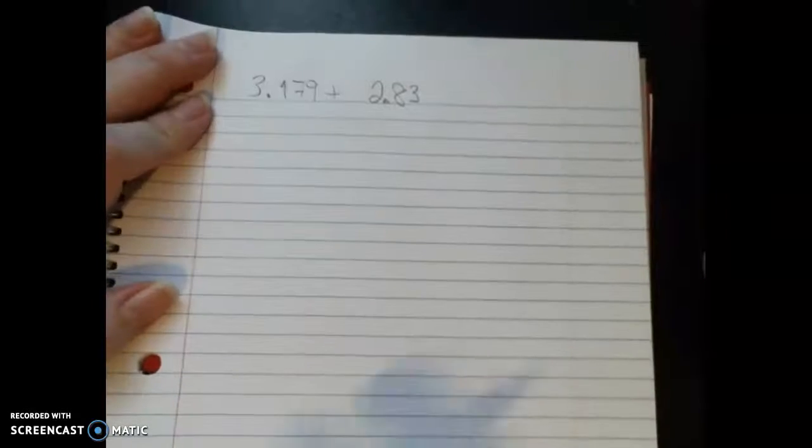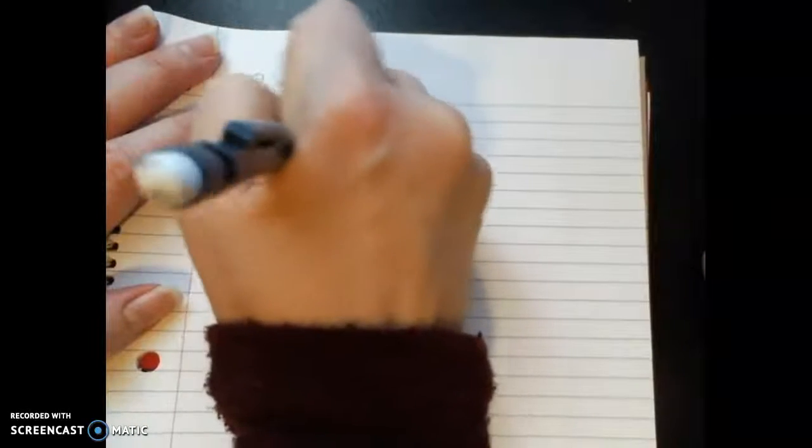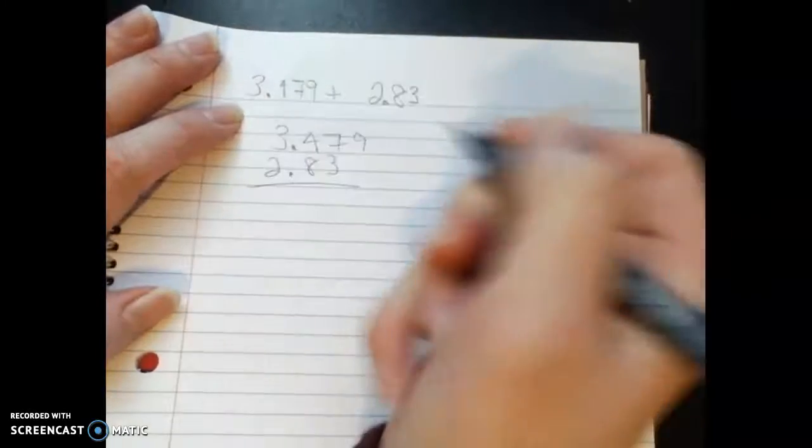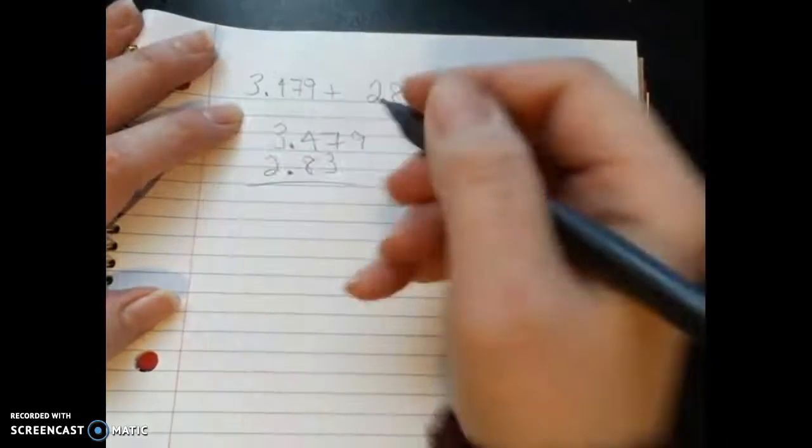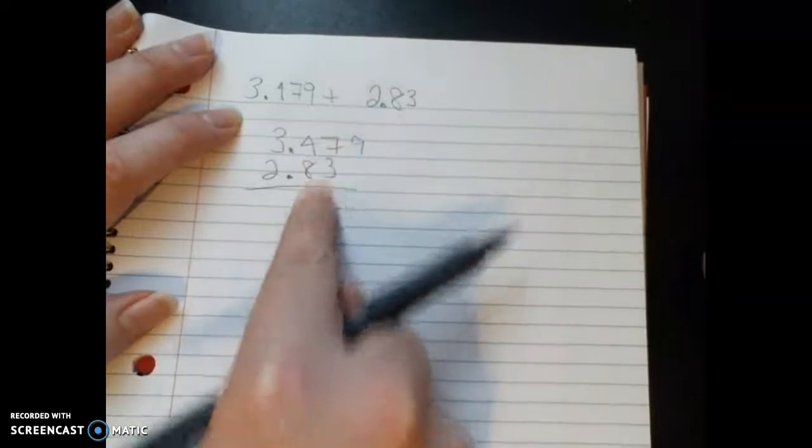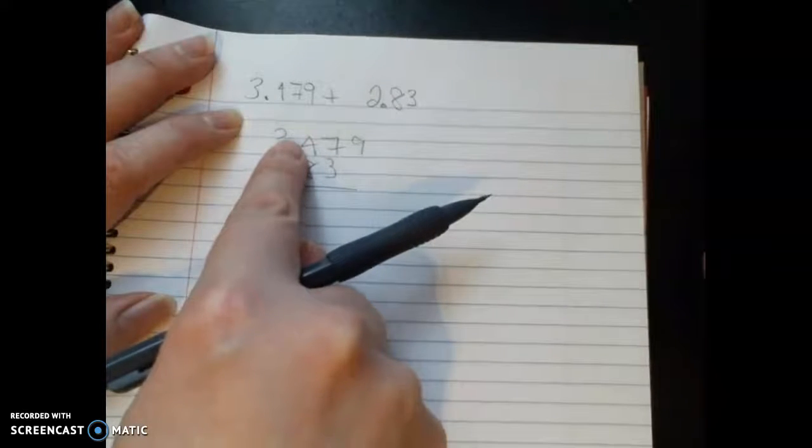Alright, let's talk about adding decimals. A lot of you were probably told to line up your decimals, but that's not really what's happening here. I mean, it happens by accident, but what you're really doing is lining up common units—thousands together, hundreds together, tens together, and ones together. By default, your decimals lined up.